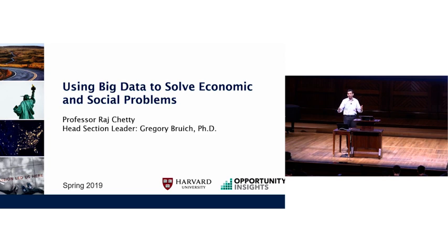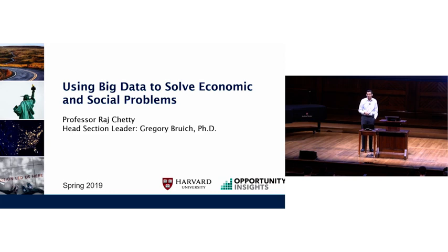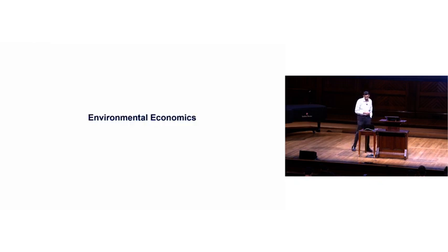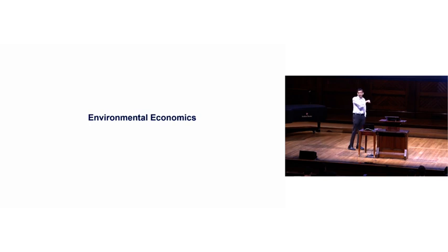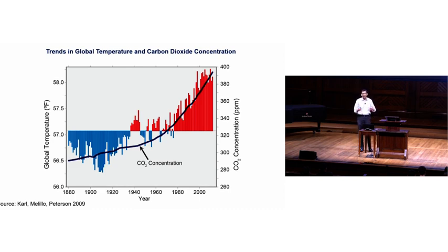Environmental economics starts with a picture you've all heard about in the media — climate change. Showing simple trends in global temperature and carbon dioxide concentration: the line shows CO2 concentration, and the bars show average global temperatures. The mean over this period from 1880 to roughly the present is 57 degrees Fahrenheit. Blue bars show years below that mean, red bars show years above. The Earth is getting warmer, and we're also seeing a tremendous increase in carbon emissions. Scientists think, and there's good evidence, that those two things are linked.